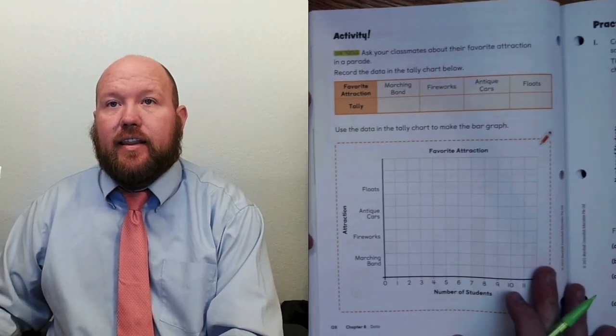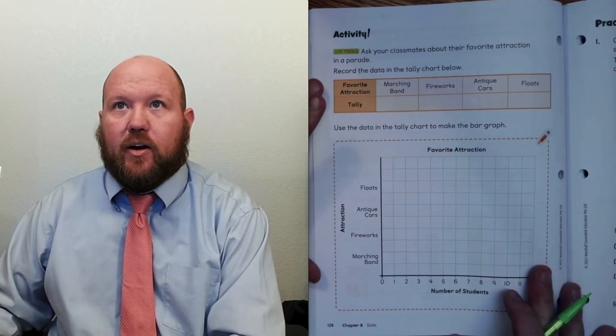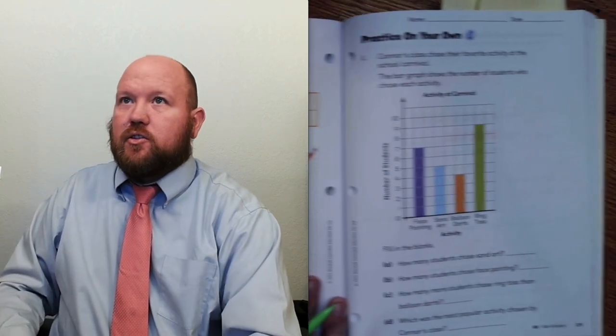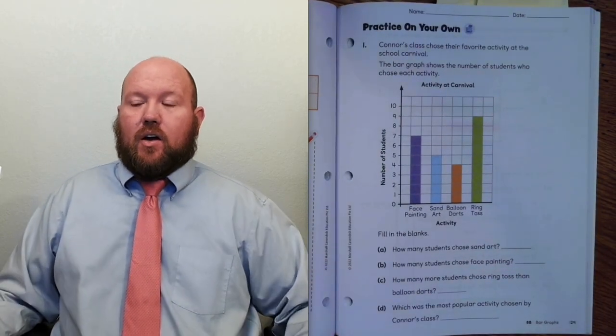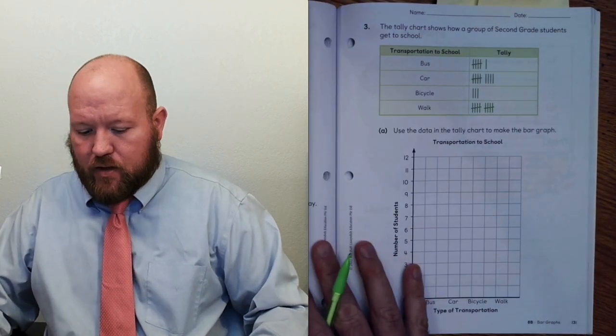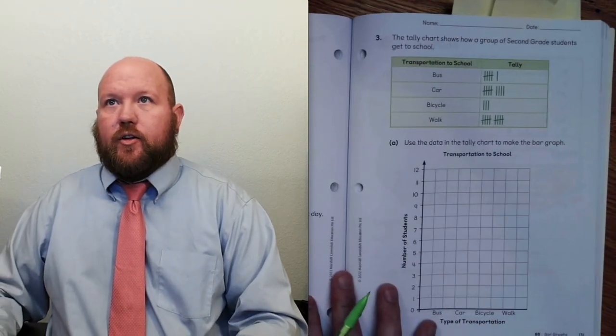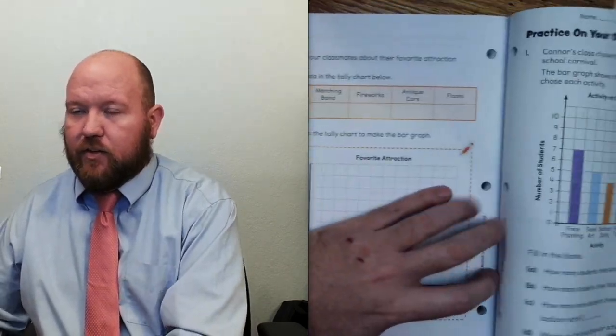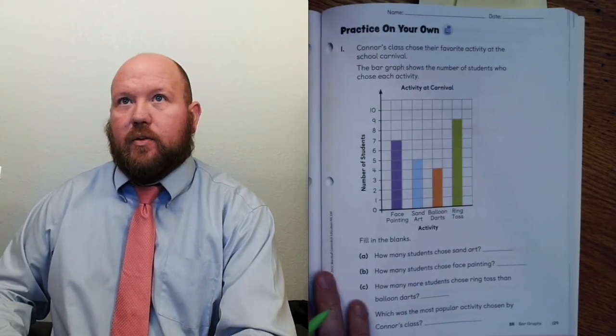Let's turn to page 128, and this is actually an activity that we are going to skip because it requires you to ask your classmates questions. Let's go to page 129, which is practice on your own. You're going to do pages 129, 130, 131, and 132. Do your best to do this independently — if you need some help from an adult, that's okay. Come back when you're finished and we'll review it together. Go ahead and pause the video now.